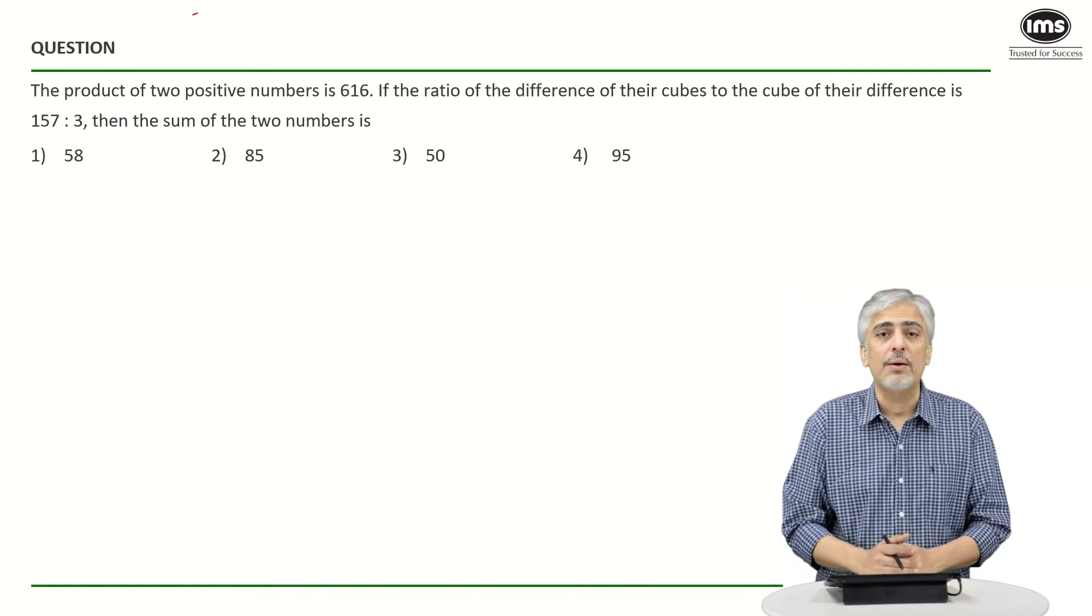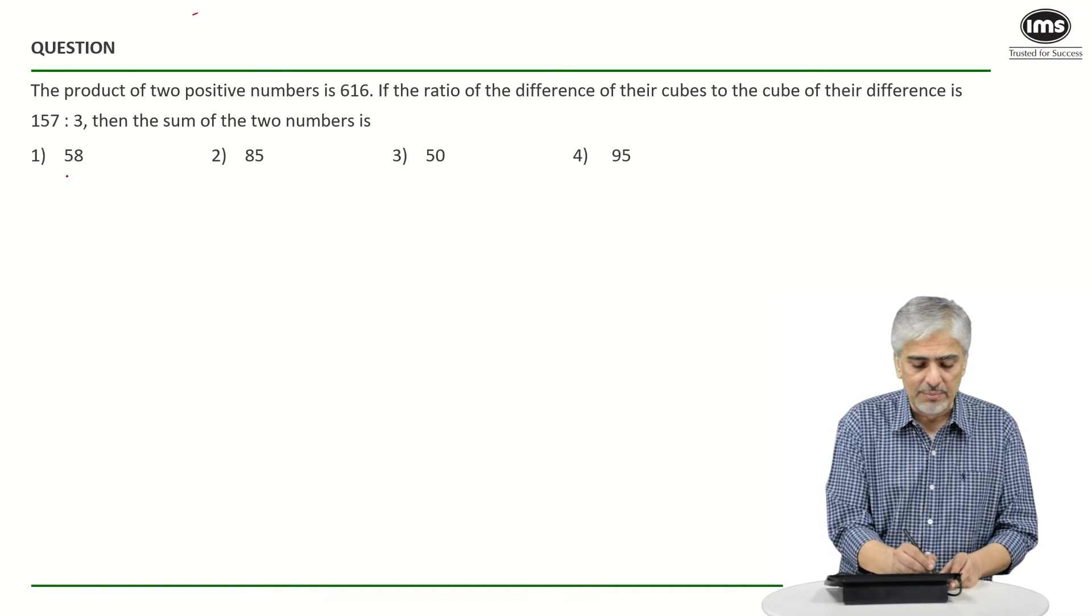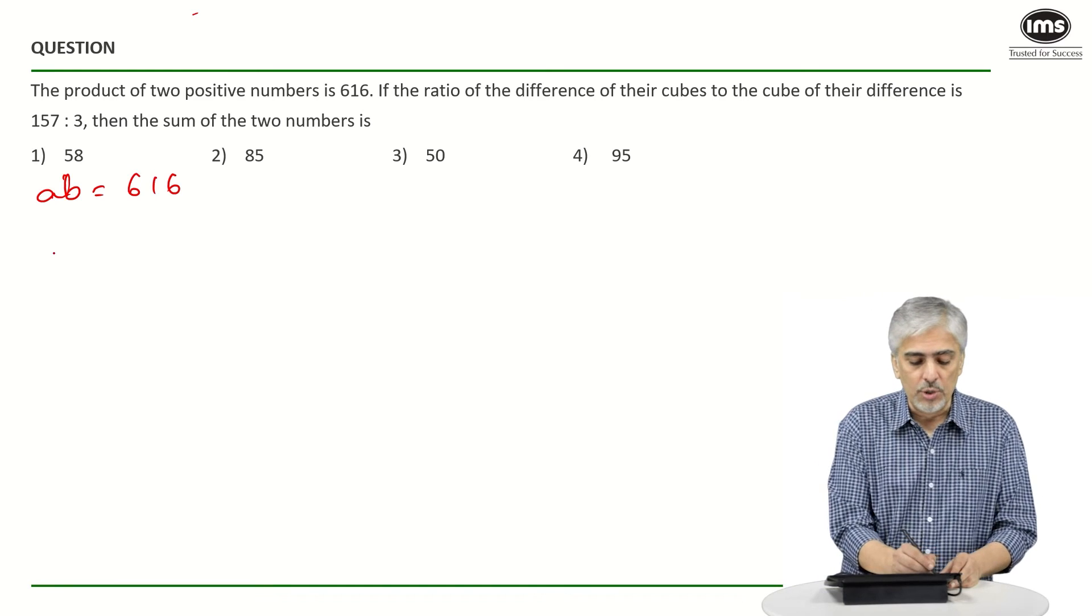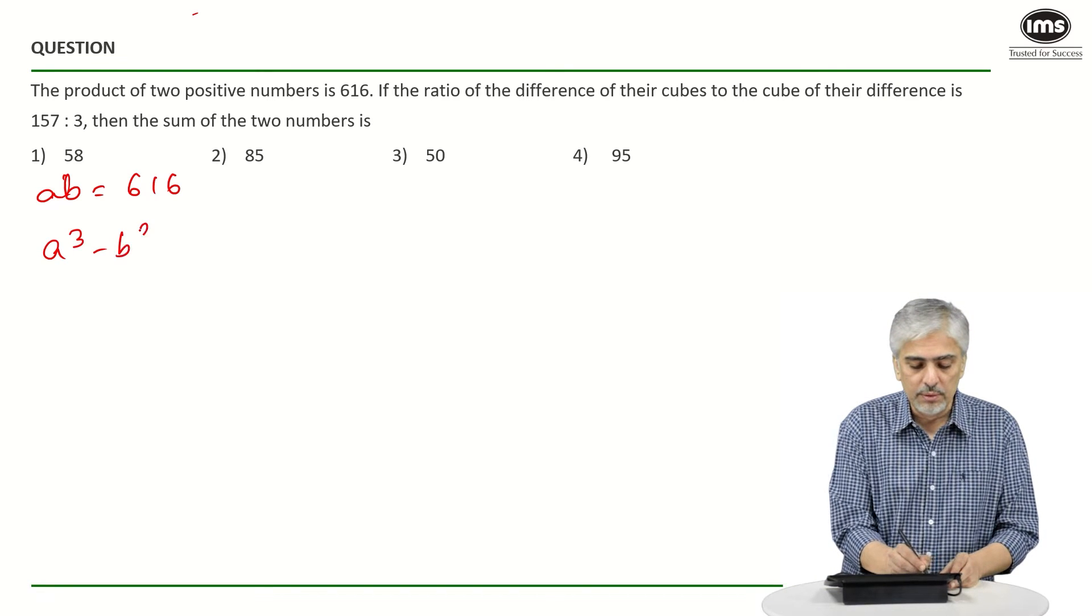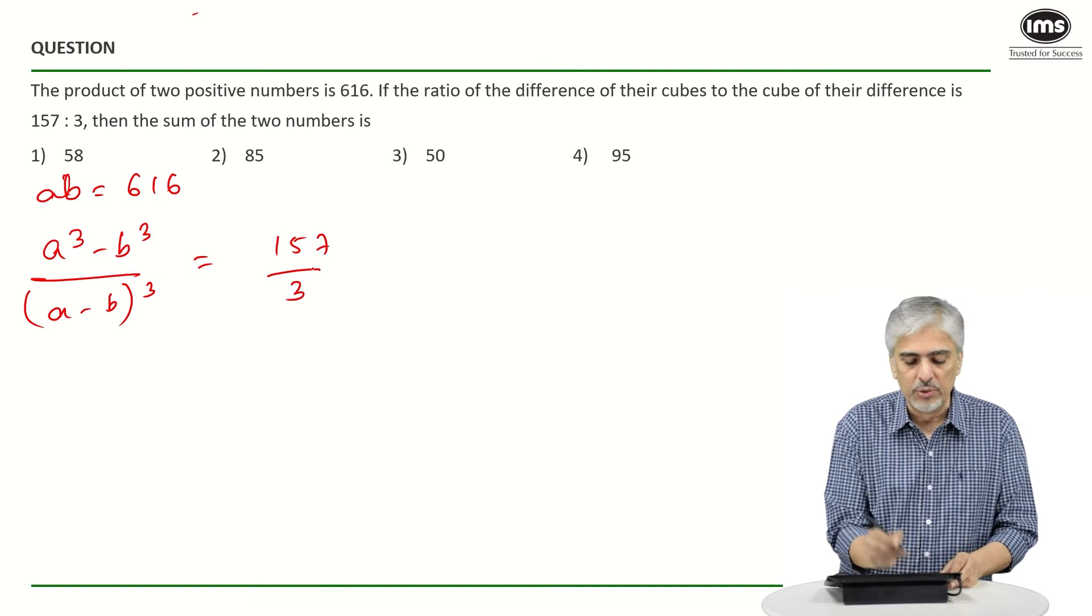Very frankly there's not too many approaches for this question but let's start with let the two numbers be a and b. So I know a multiply by b is equal to 616 and they have said what a³ minus b³ upon (a minus b)³ is 157 upon 3.